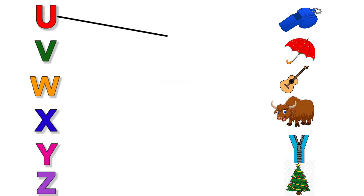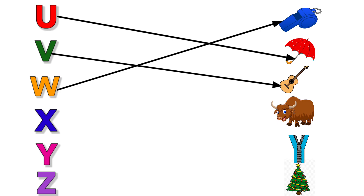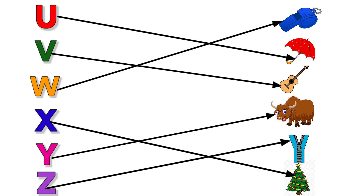U for Umbrella. V for Violin. W for Whistle. X for Exmostry. Y for Yaag. Z for Zip.